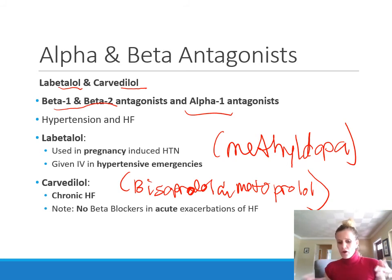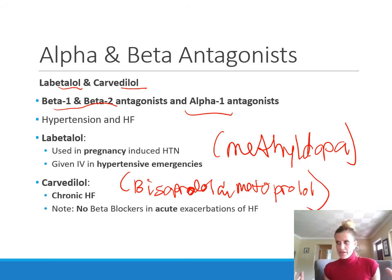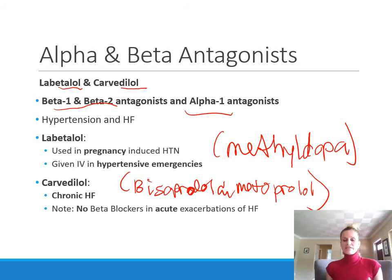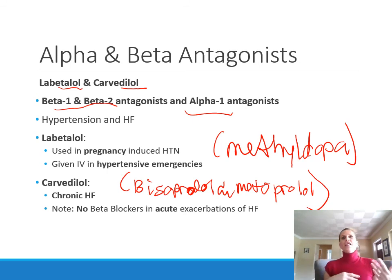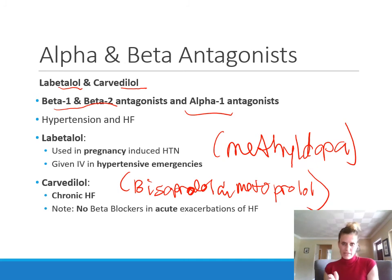The way beta blockers work in heart failure relates to breaking a damaging cycle: there's not enough blood being pumped, so there's a big sympathetic response making the heart work harder. The heart works harder, which damages it further and decreases pumping efficiency, leading to even less cardiac output and more sympathetic response. Beta blockers stop that cycle by preventing the heart from continuously trying to work harder and harder, ultimately protecting the heart.